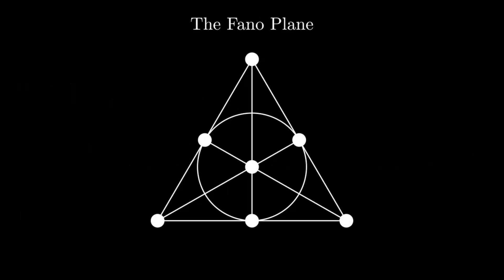One famous Steiner system is the so-called Fano plane. It has the parameters 7, 3 and 2, which basically means that there are 7 lines, each containing 3 points. Every pair of points belongs to a unique line. Pause the video and convince yourself of these statements.